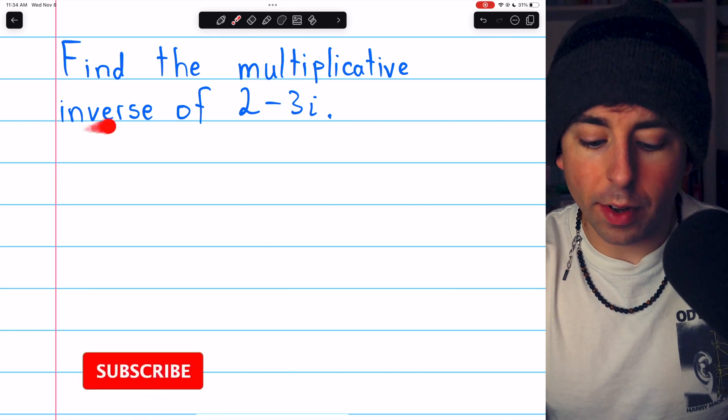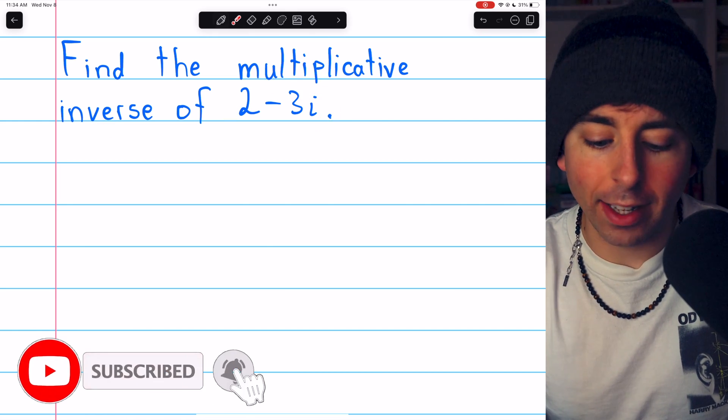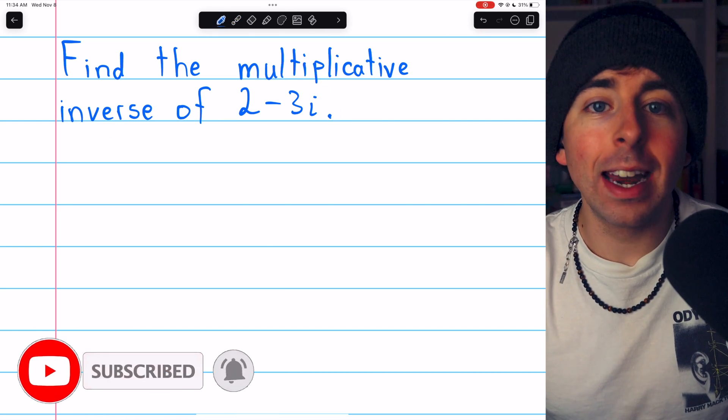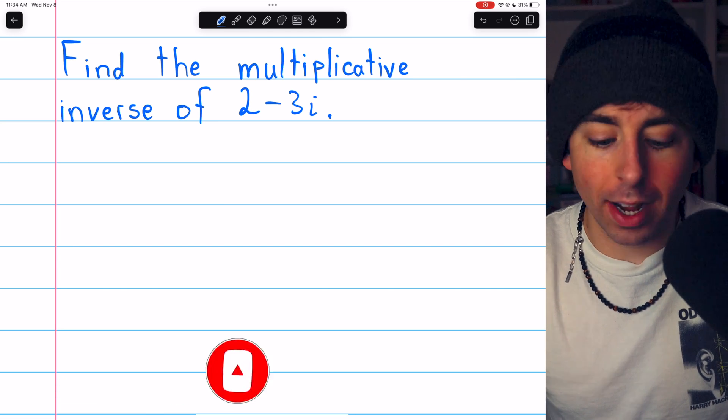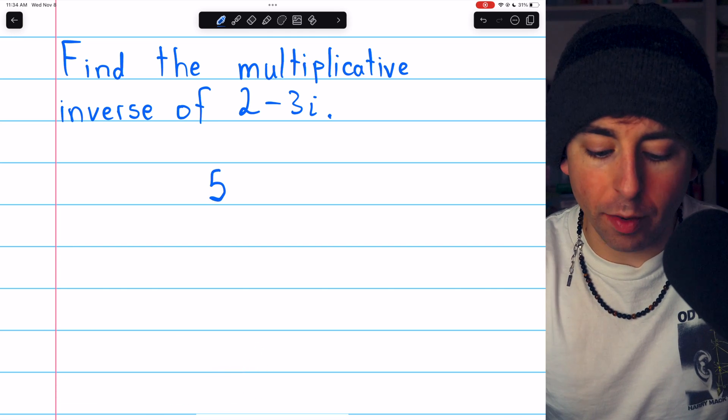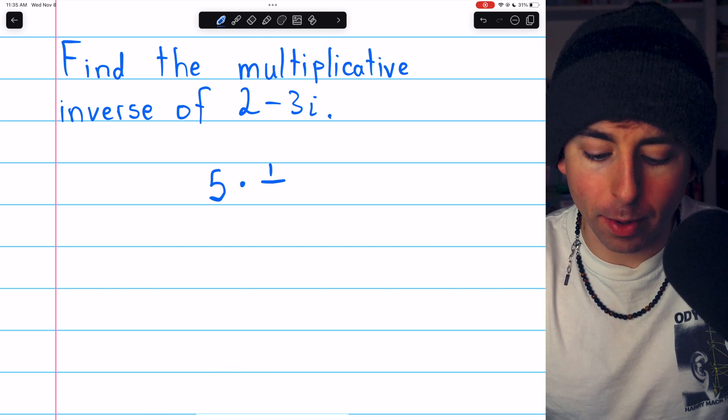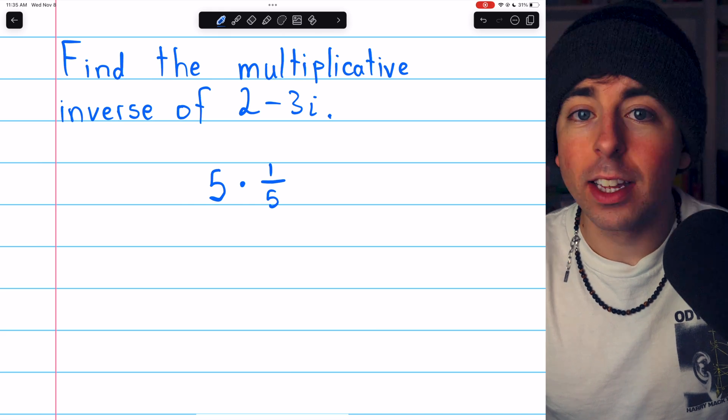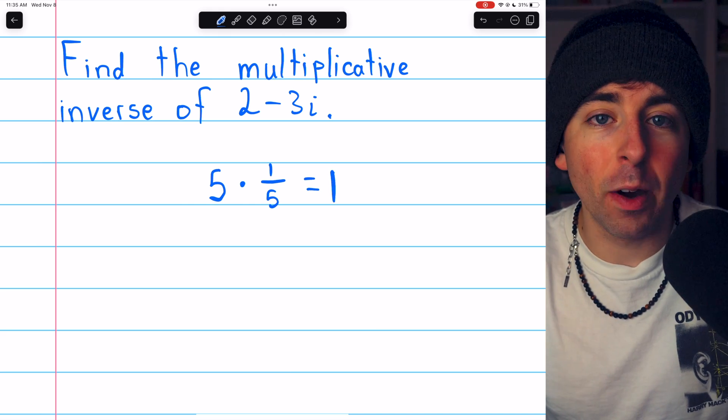Let's find the multiplicative inverse of 2 minus 3i. Now for real numbers, you probably find this really easy. The multiplicative inverse of 5, for example, is 1 over 5. You multiply them together and you get 1.